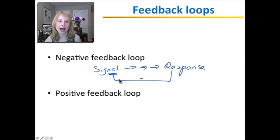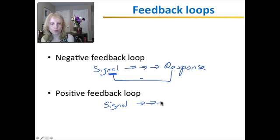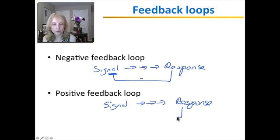So negative feedback loops tend to be stabilizing as opposed to positive feedback, where again you have a signal that through one or more steps produces a response. And when it's positive feedback, the response reinforces that original signal. So it's positive feedback into that initial signal, strengthening the response. In negative feedback, you had a weakening or turning off the response. Here you have a strengthening of this loop.